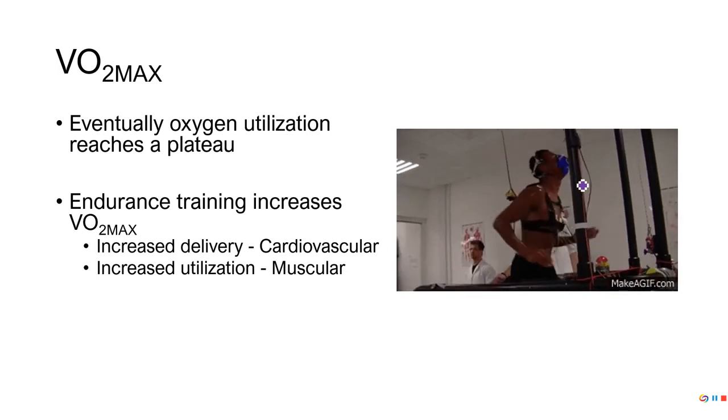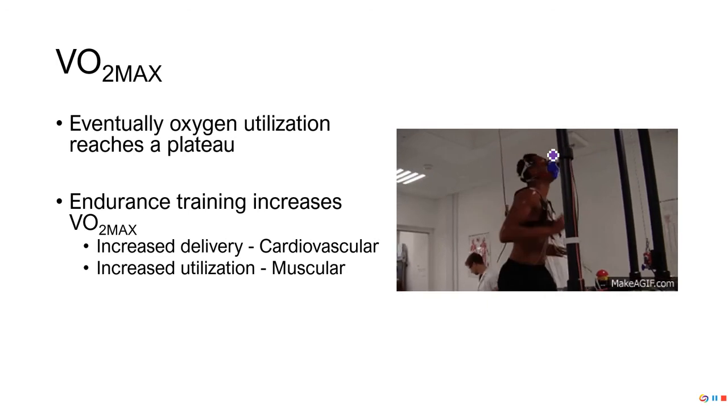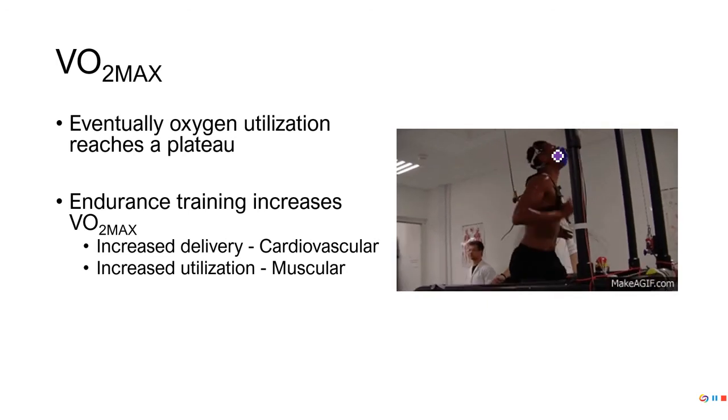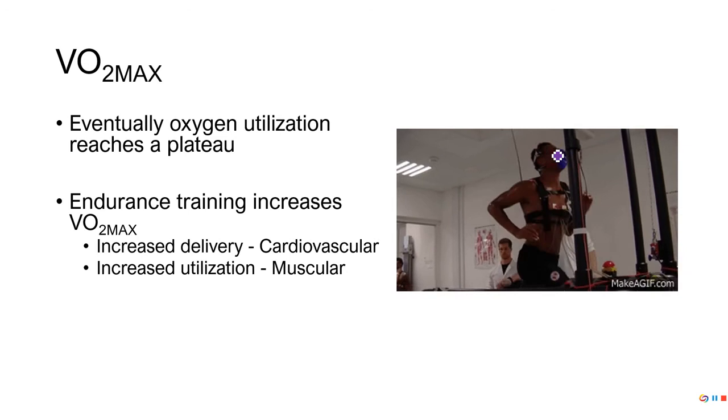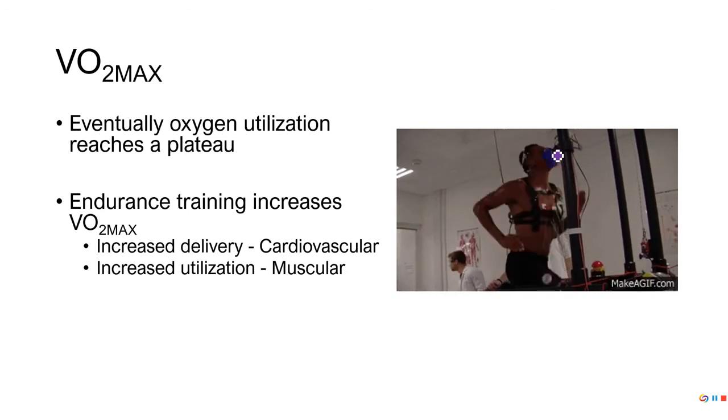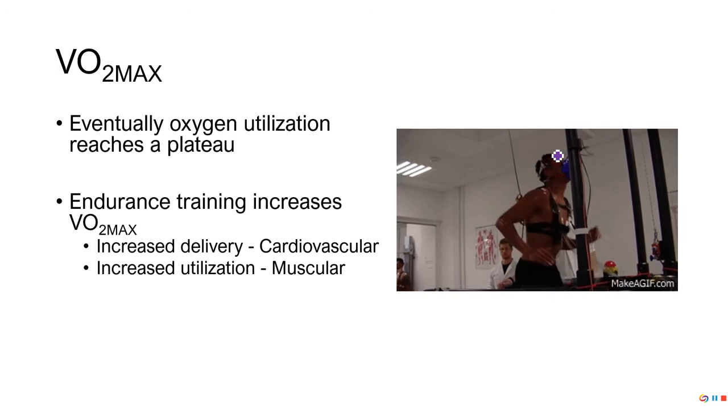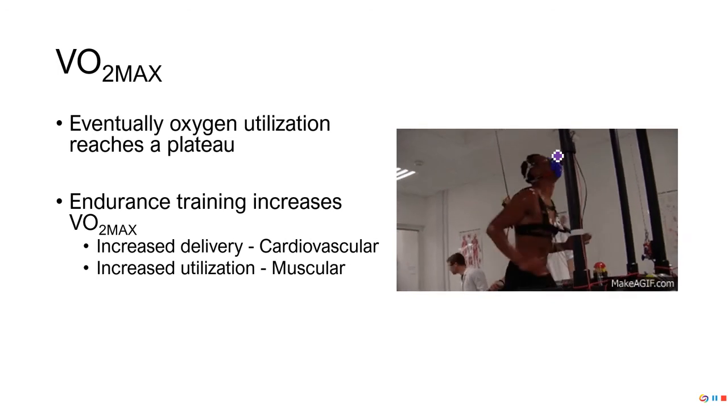We can get plenty of oxygen into our body and into our bloodstream. Most of us can. However, in some elite athletes, they actually can't get the oxygen from their lungs into the bloodstream. And that's where that transit time thing comes from that we talked about a few weeks ago.